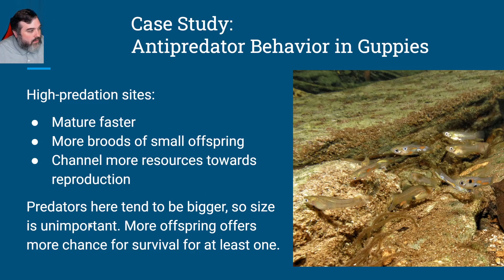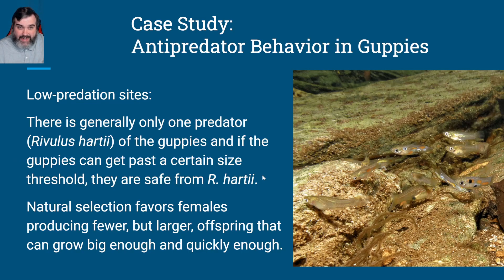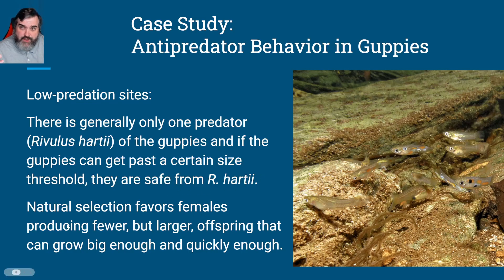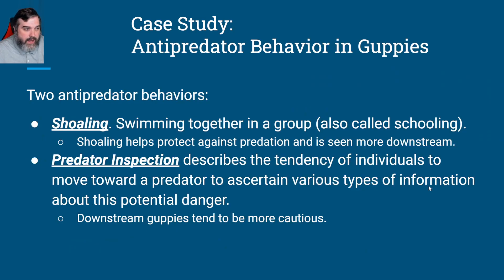At the low predation site, you reach a point where the fish are big enough that they're not as likely to be eaten. Natural selection tends to favor females that produce fewer offspring so they can devote more resources to those offspring. Those offspring can then get big enough, quickly enough, to avoid being eaten by the predator.